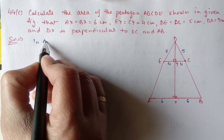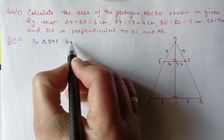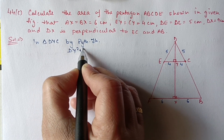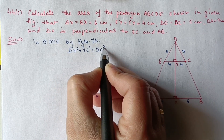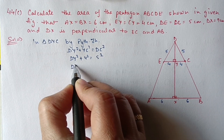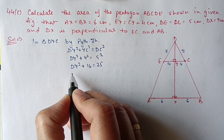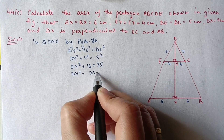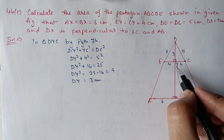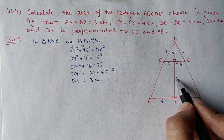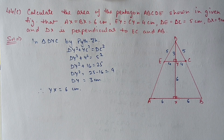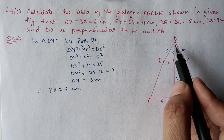In triangle DYC, by Pythagorean theorem: DY² + YC² = DC². YC is 4 and DC is 5, so DY² + 16 = 25, giving DY² = 9, so DY = 3 cm. Since DX is 9 total and DY is 3, YX = 6 cm. The pentagon is divided into two parts: triangle DCE and trapezium ECBA.